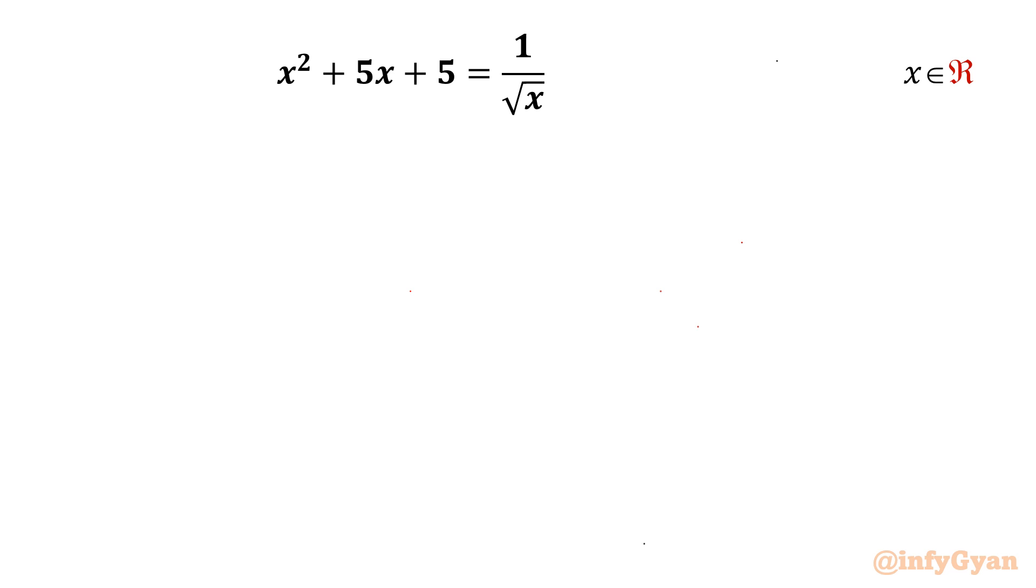It is x² + 5x + 5 = 1/√x, where x belongs to real numbers. We have left hand side one quadratic equation or quadratic function, right hand side one hyperbolic function where x is positive.